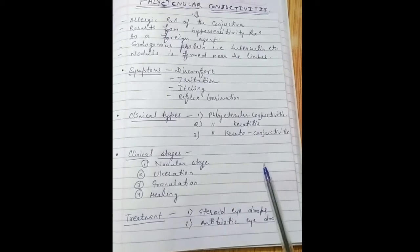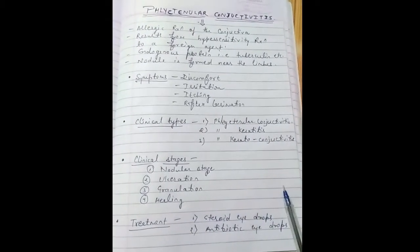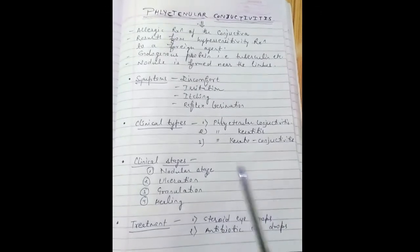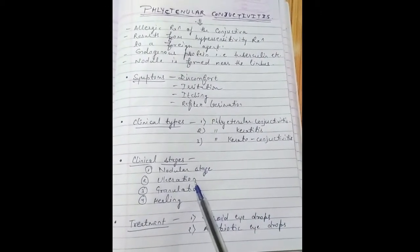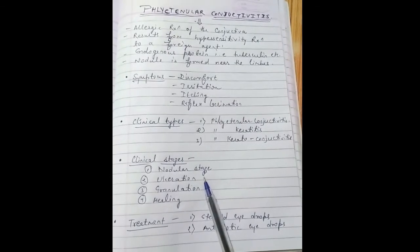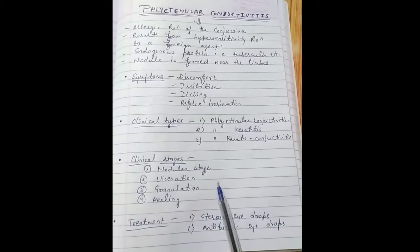The vessels that surround these are dilated and give reddish appearance. Second is the ulceration stage - in this, necrosis at the apex of the nodule is formed and the ulcer is formed.